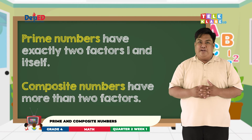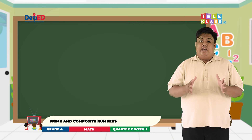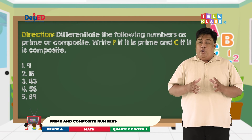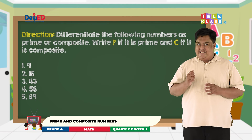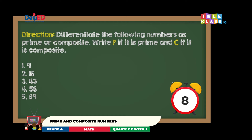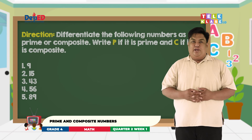Now, kindly get your math notebooks and answer the following. Are you ready? This is what we're going to do: differentiate the following numbers by identifying if the given number is prime or composite. Just write P if it is prime or C if it is composite. I will give you 30 seconds to answer numbers 1 to 5. Are you ready, guys? Your time starts now.